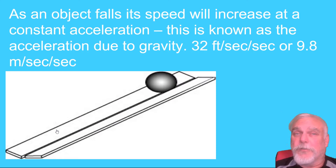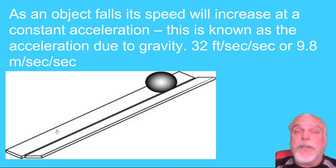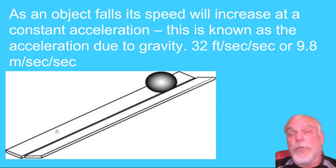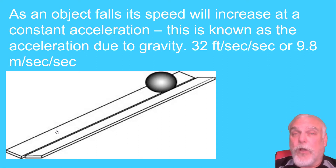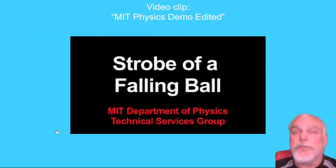Were you surprised by the results of that experiment? As an object falls, its speed is going to increase at a constant acceleration — this is known as the acceleration due to gravity. Here on Earth, the acceleration due to gravity is 32 feet per second per second, or 9.8 meters per second per second. Every second that an object falls, its speed will increase by 32 feet per second. Here's a clip showing that the object travels faster the longer it falls.